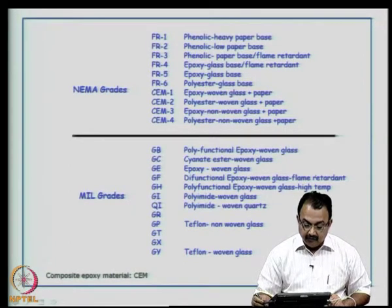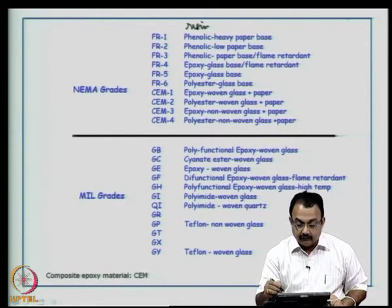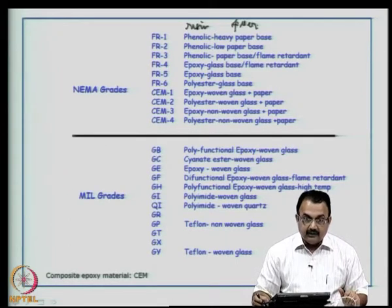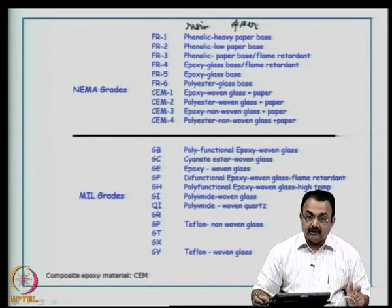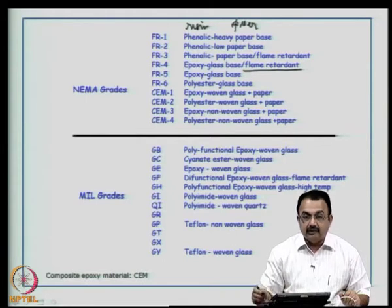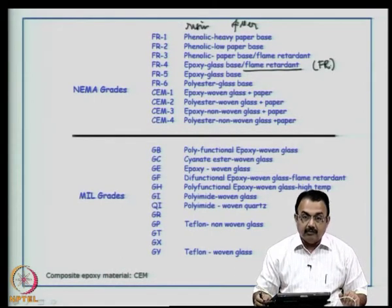FR1 is a phenolic heavy paper base — the resin is phenolic-based and the filler is paper-based. FR2 is a phenolic low paper base. FR4 contains an epoxy resin with a glass filler, and more importantly it is flame retardant — that is why we use the term FR, meaning flame or fire retardant. Certain qualification procedures exist to certify a material as fire retardant.